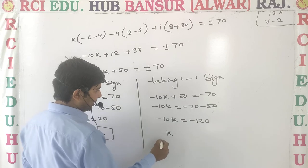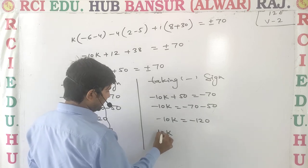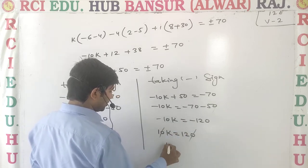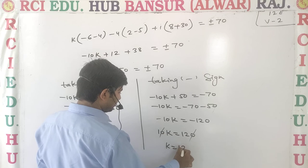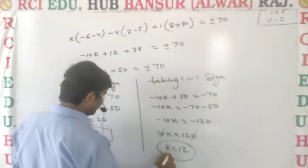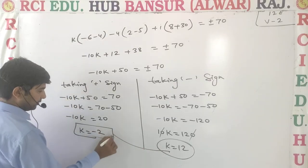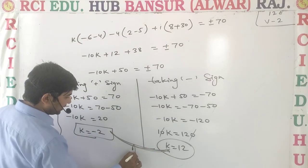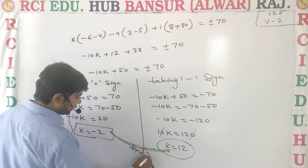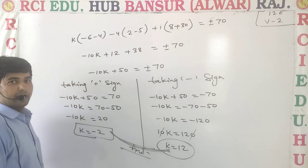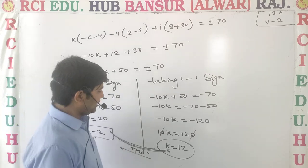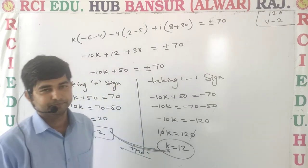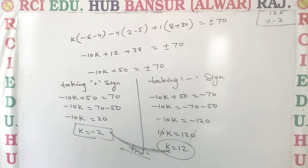The negatives cancel out, giving 10k equals 120, so k equals 12. Therefore the final answers are k equals minus 2 and k equals 12. That completes this question. Thank you.